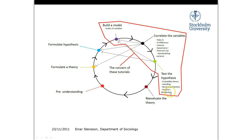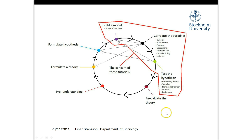The area highlighted in red is what we're going to talk about in this course. We're going to start with the scales of variables, then correlate using specific measures, and test hypotheses using probability theory, sampling, the normal distribution, and the Student t-distribution. The pre-understanding, theory, and hypothesis parts are what you have your other sociological courses for — they're included at the basic level here at Stockholm University.